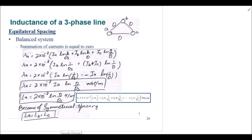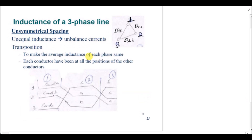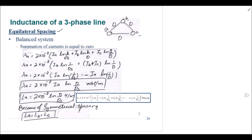In this lecture we are going to find the inductance of a three-phase line. We will be considering two scenarios. The first one is equilateral spacing, where we have equal distance between all the phases — a, b, and c — with distance d between all pairs, placed at the vertices of an equilateral triangle. The second scenario is unsymmetrical spacing, where distances are defined by d31, d12, and d23.